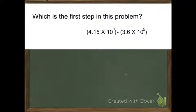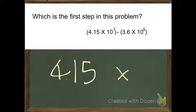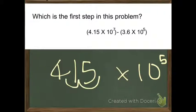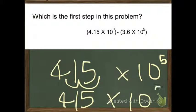So, we're going to take 4.15 times the 10 and turn it into a 5. So what we do is take it two decimal points backwards and there we go. 415 times 10 to the 5th power.